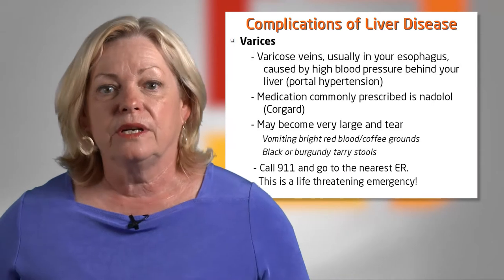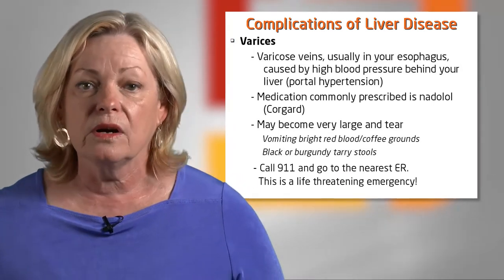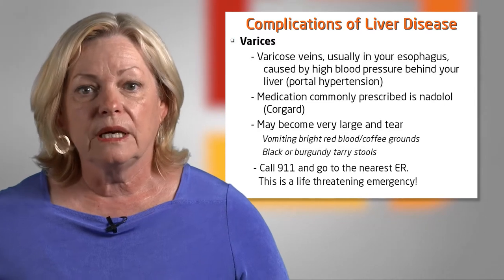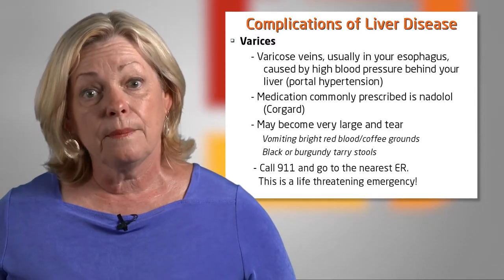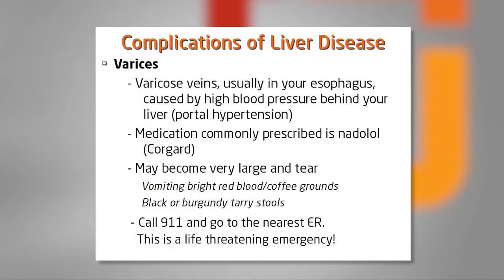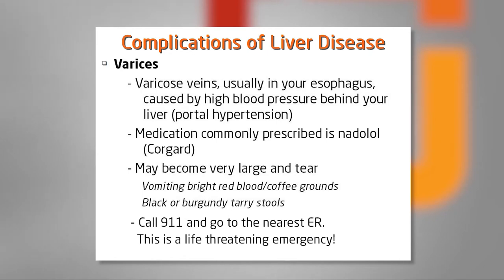The third complication is varices — varicose veins that develop usually in your esophagus, but can develop anywhere, and can become as big as your thumb. They can tear and bleed profusely. It's a life-threatening emergency: call 911 and go to the nearest emergency room. You should be working with your local gastroenterologist to have regular endoscopy, where they take a lighted camera down your esophagus to check what stage varices you have and if they need to be treated.